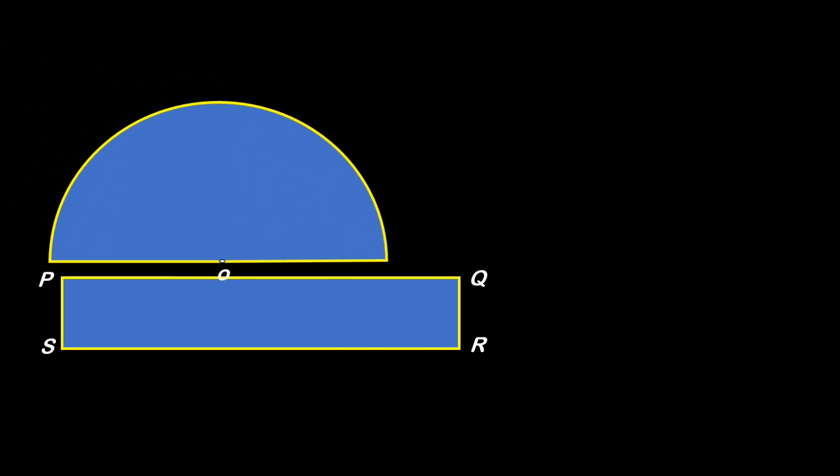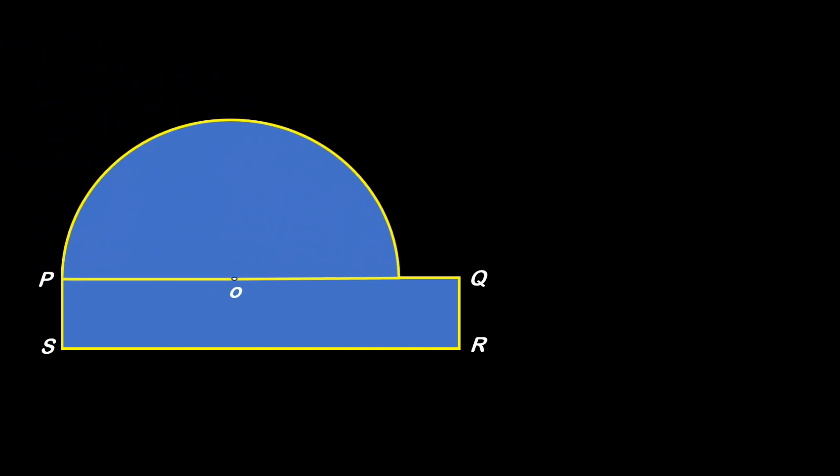Hello everyone, in this video we are given a rectangle PQRS. The upper side of this rectangle is covered by a semicircle with center at O and radial length r.